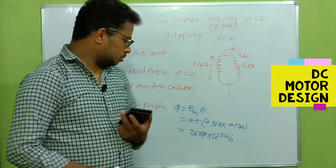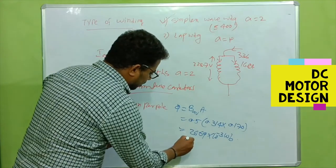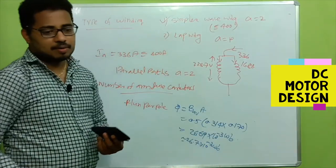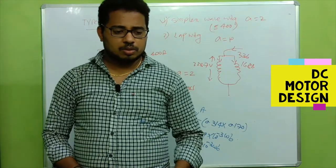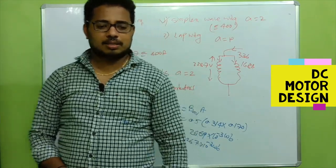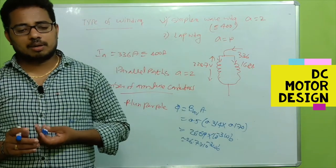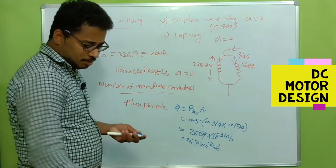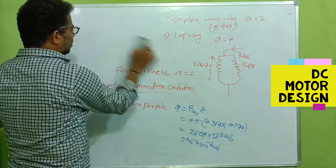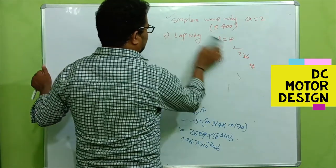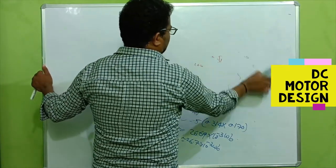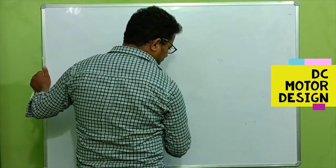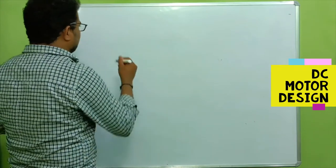Calculating that gives 26.69, so the flux value is 26.69 × 10⁻³ Weber. We can take it as 26.7 × 10⁻³ Weber. Now let's calculate the number of slots. For calculating the number of slots we have to assume a certain slot pitch, which is generally around 25 to 35 mm for this range.